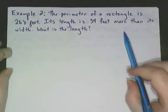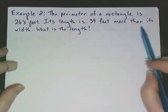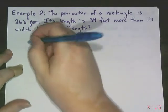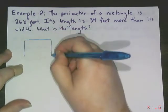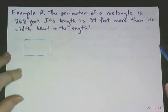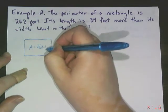Second example, the perimeter of a rectangle is 268 feet. Its length is 34 feet more than its width. What is the length? So let's draw a picture here to represent. Now with rectangles, it can be tricky which side is the length, which side is the width. It doesn't really matter. We know that the area is 268 feet.